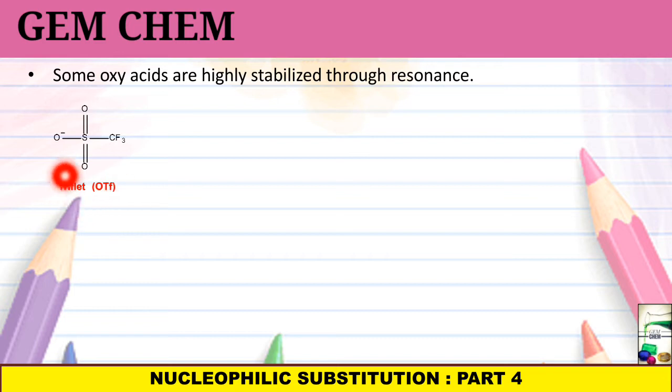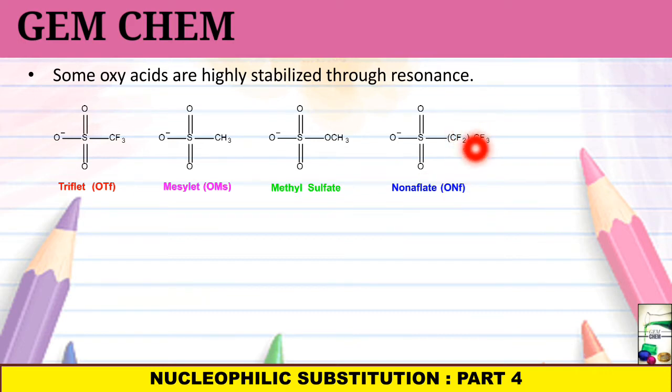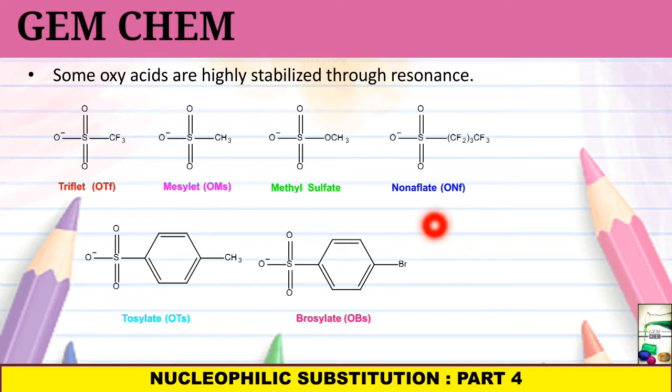First is triflate. There is SO3- and CF3. If the CF3 is substituted by a methyl group, then it is known as mesylate. If this CH3 is being substituted by OCH3, it becomes methyl sulfate. Next is CF2, CF3 - this is nonaflate. Next is substitution by a toluene - tosylate. Another one is presence of bromobenzene - brosylate. And the last one is nosylate because there is a substitution with nitrobenzene. Thus, these are always taken as good leaving group.